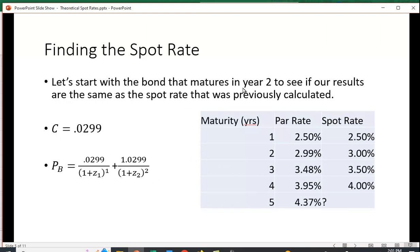Let's start with the bond that matures in two years to see if our results are the same as the spot rate that was previously calculated. We want to check and make sure we're using the right formula. Here, the coupon, if we assume the par value is $1, then the par rate for a two-year bond, 2.99%, would be 0.0299.